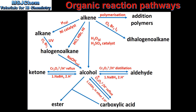Aldehydes can be reduced to primary alcohols using a reducing agent such as sodium borohydride. Ketones can be reduced to secondary alcohols using the same reducing agent. And carboxylic acids can be reduced to primary alcohols using a different reducing agent such as lithium aluminium hydride.